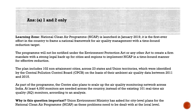The overall objective of the program includes comprehensive mitigation actions for prevention, control, and abatement of air pollution. It also aims to augment the air quality monitoring network across the country and strengthen awareness and capacity-building activities. City-specific action plans are being formulated for 102 non-attainment cities considered to have air quality worse than national ambient air quality standards. These 102 cities are from 23 states, not from all states.